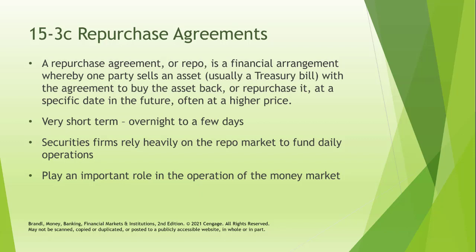A reverse repo is where one party buys an asset with an agreement to sell the asset back. When buying the asset they are effectively lending money out, and then they sell it back at a higher price — that's how they earn the interest. In other words, they're providing money with the asset serving as collateral.